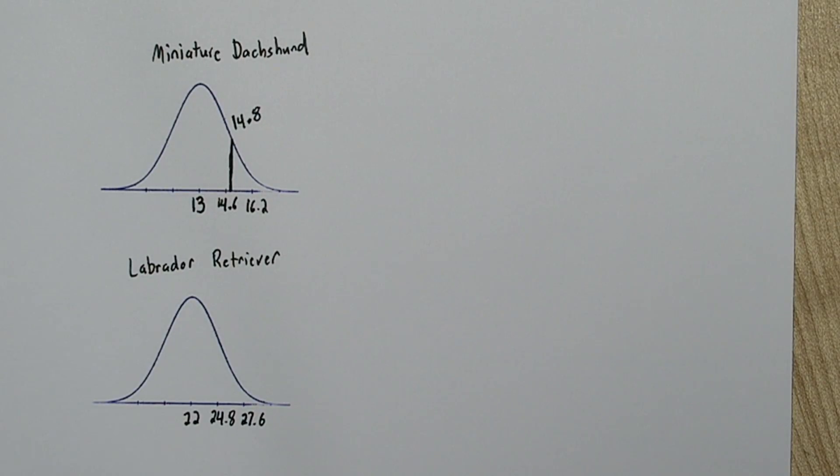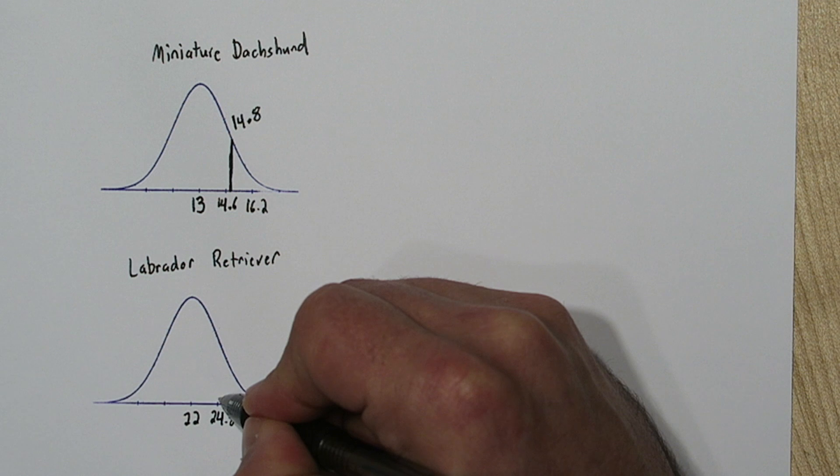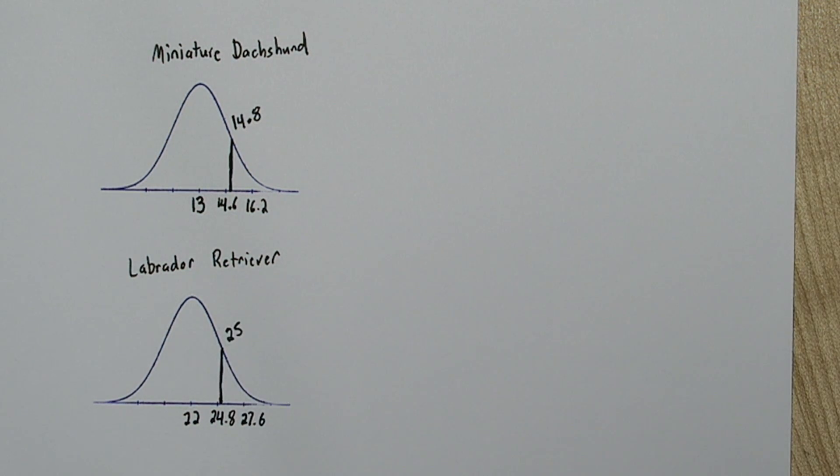So this dog was definitely running faster than the average speed for its breed. Now for the Labrador Retriever, the 25 is also between 1 and 2 standard deviations, maybe about here. So this dog was also running faster than average for its breed.